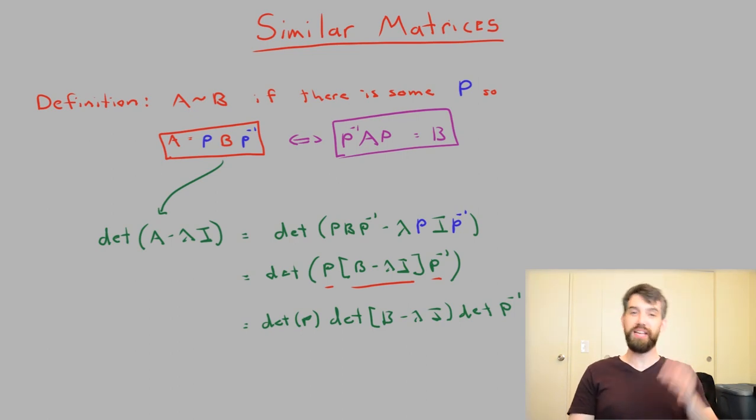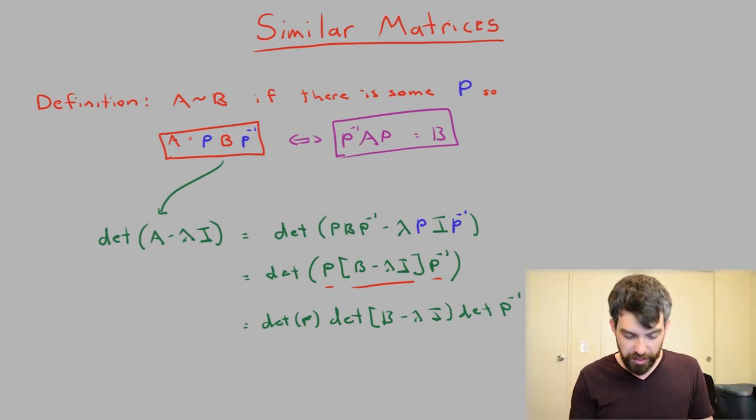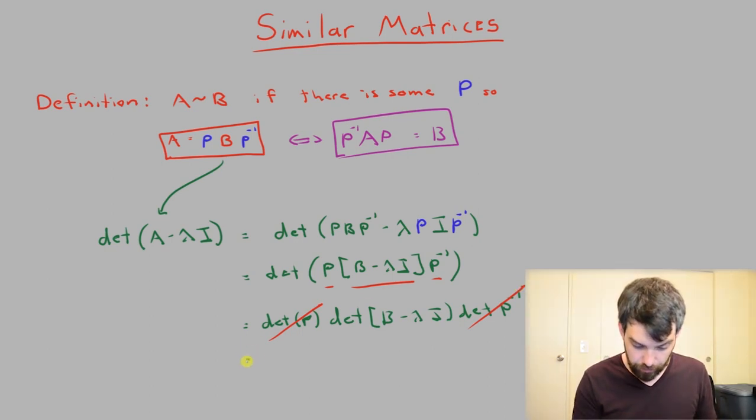One final thing, digging into the memory banks about properties of determinants here. Another property was that the determinant of a matrix is 1 over the determinant of the inverse. So this determinant P is just some number, and the determinant of P inverse is 1 over that number. So I can cancel the two of them, and that just leaves me with the determinant of B minus lambda I.